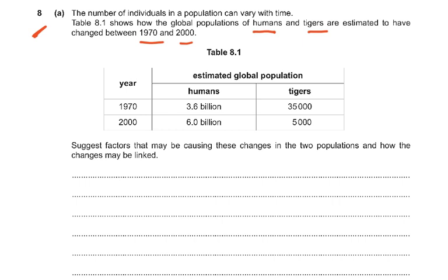Humans need land for buildings, houses, and roads, leading to deforestation and urban development. Tigers are also being killed because they have perceived medicinal value in their organs, are used as trophies with their fur displayed in homes, or because they predate farm animals.